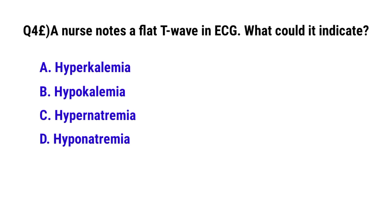Question No. 43. A nurse notes a flat T wave on ECG — what could it indicate? The correct option is B: Hypokalemia.